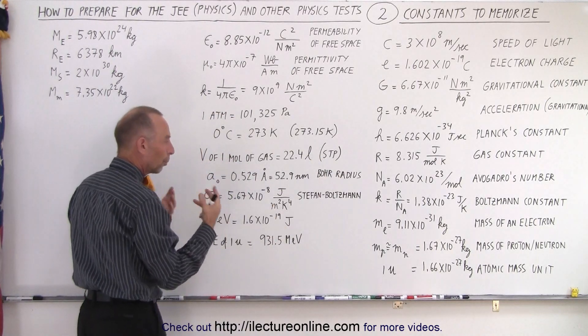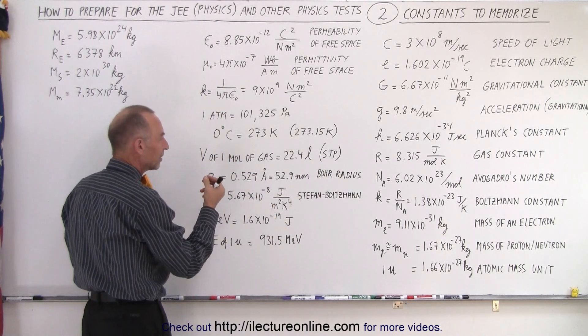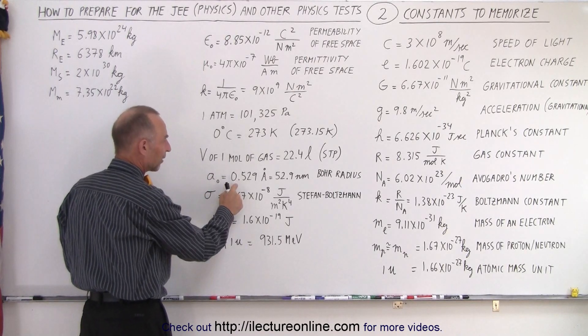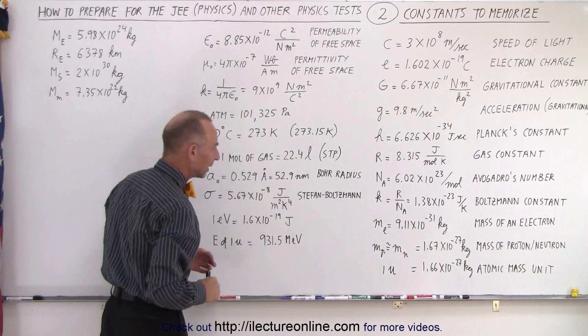Bohr's atom, or Bohr radius, I should say. The distance from the electron to the proton in a hydrogen atom is 0.529 angstroms, or 52.9 nanometers.